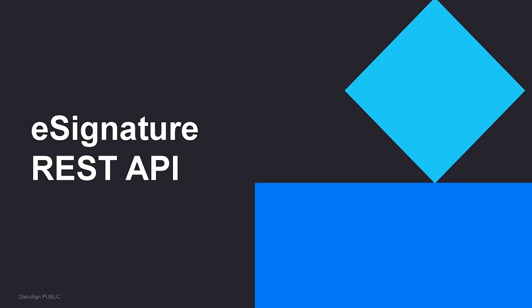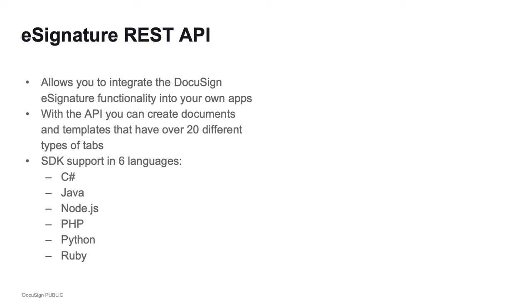Maybe you've used our web UI before and sent documents with tabs. Since this is our developer conference, you might be wondering how you can do the same thing programmatically. The answer is the eSignature REST API, which allows you to integrate DocuSign eSignature functionality into your own apps. With the API, you can create documents and templates that have over 20 different types of tabs. We also have SDK support in six different languages, and in my code demo I'll be using Bash, though you can do the same in any of those languages.